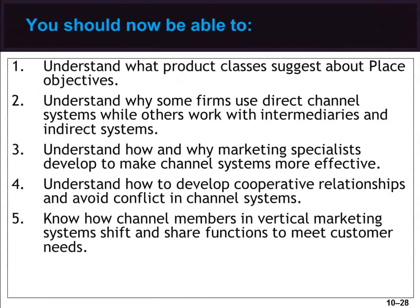Now you should be able to understand what product classes suggest about place objectives, understand why some firms use direct channel systems while others work with intermediaries and indirect systems, understand how and why marketing specialists develop to make channel systems more effective, understand how to develop cooperative relationships and avoid conflict in channel systems, and know how channel members in vertical marketing systems shift and share functions to meet consumer needs.